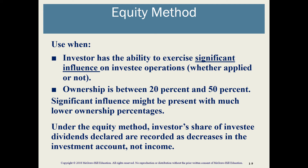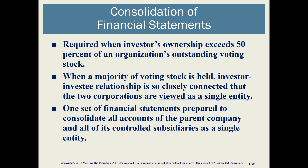Now we get to the main focus of this presentation: the equity method. The equity method applies to ownership between 20 and 50%, but remember these percentages are subjective — what we're really looking at is whether we exercise significant influence over the other corporation. Even if we own only, say, 6% of another corporation, if through contracts we exercise significant influence, we are required to use the equity method. If ownership exceeds 50%, we are considered one entity and must consolidate financial statements, which we will cover extensively in chapters two through six of this course.